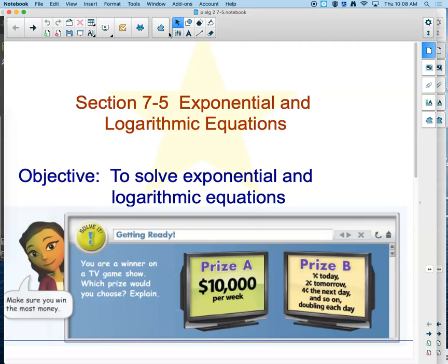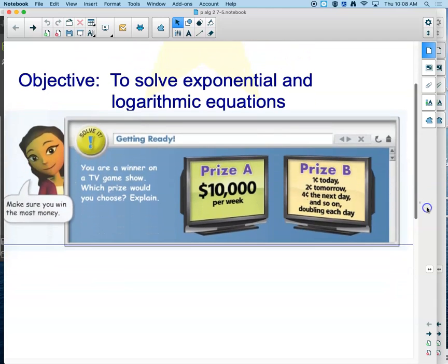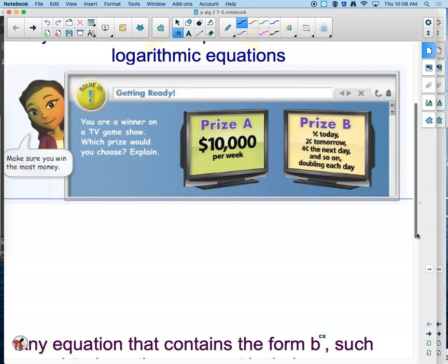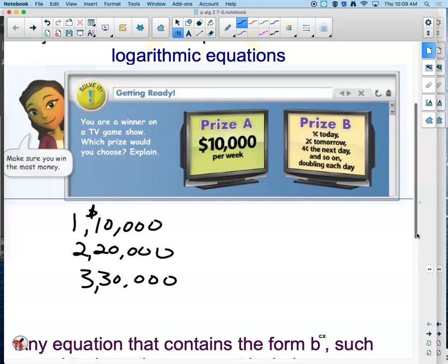I love this getting ready. So we're going to talk about exponential and logarithmic equations because we're learning how to solve. That's what algebra is, finding all the solutions to anything that's out there to solve. And you won a TV game show. You're going to get some money. Which prize would you choose and explain? Well, look at A. You're walking away with $10,000 every week. So week one, you got $10,000. Week two, now you've got a total of $20,000. Week three, grand total of $30,000. I better put a little comma here or something so it breaks it up. That's not bad. Exactly, the rest of your life. You know, it's kind of like Publisher's Clearinghouse. $5,000 every month, every week for the rest of your life. This one says $10,000.